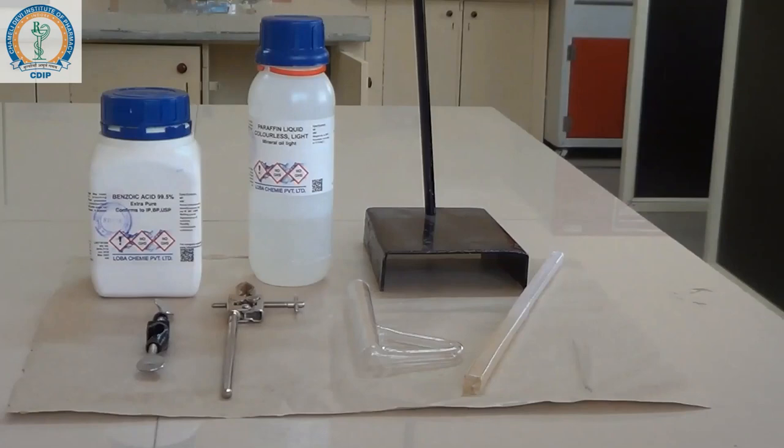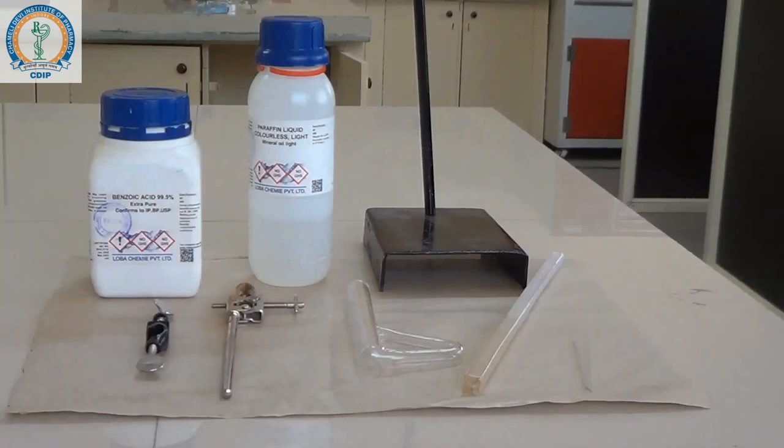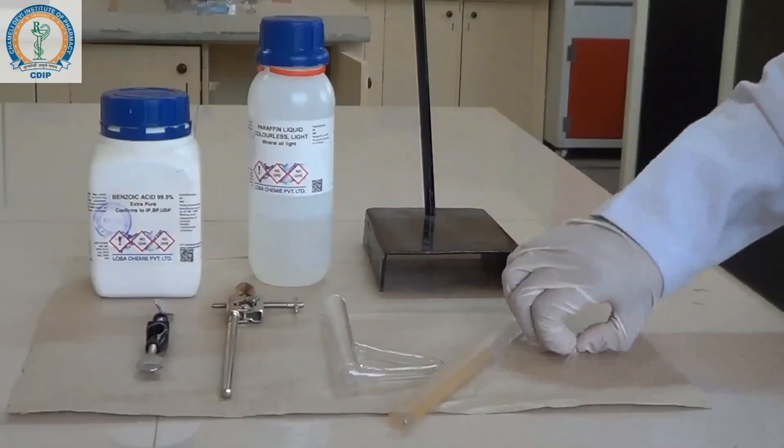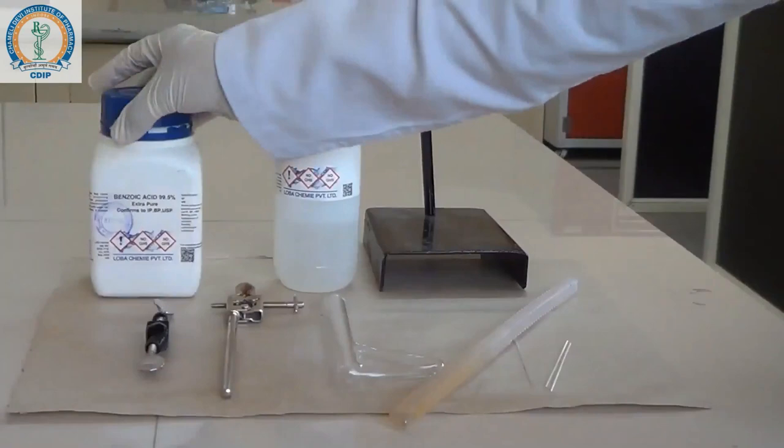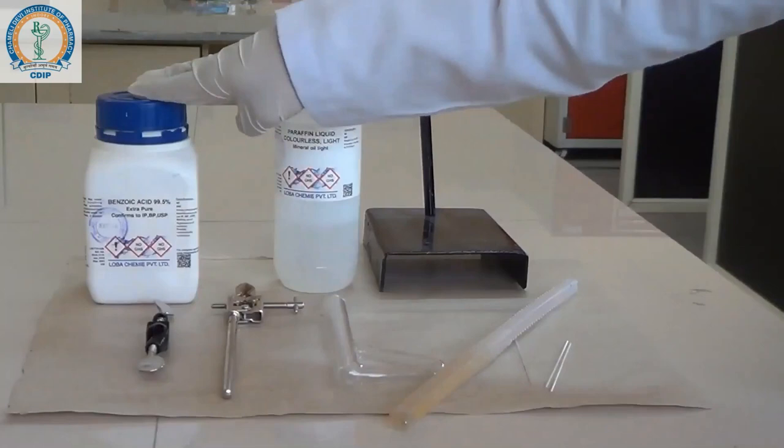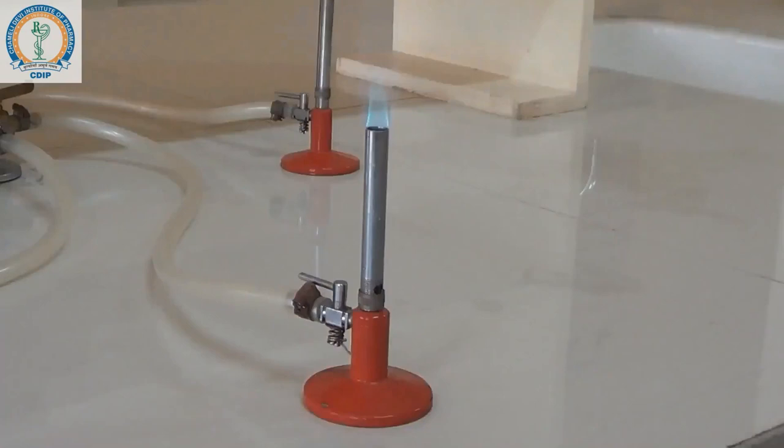The requirements for melting point determination include a heel tube, thermometer, capillary tubes, clamp stands, liquid paraffin, and the sample—benzoic acid in this case—of which we need to determine the melting point.